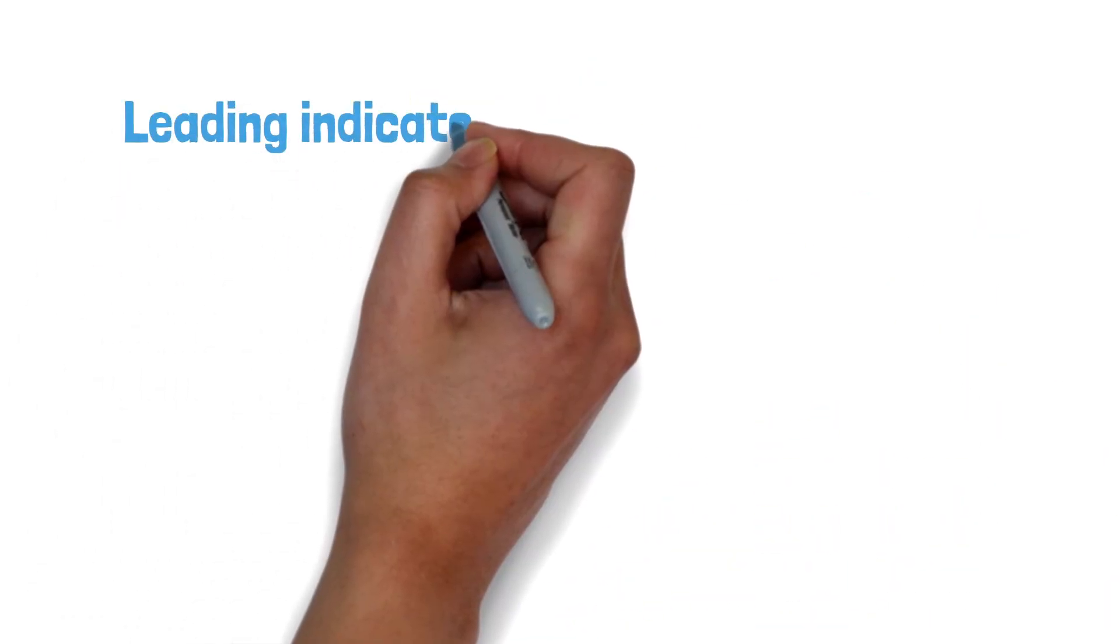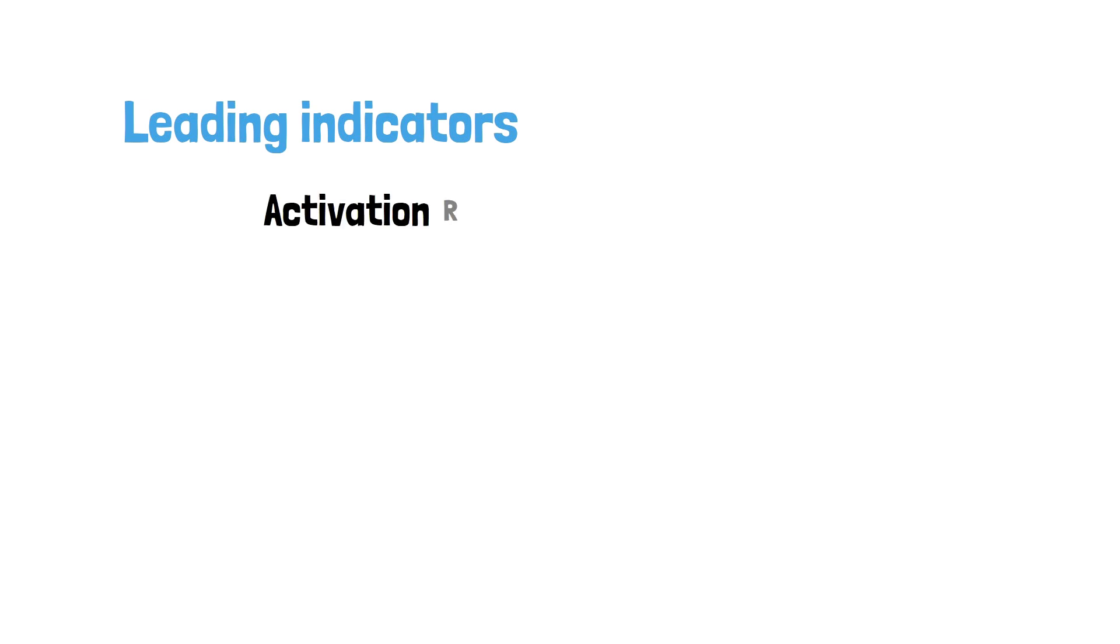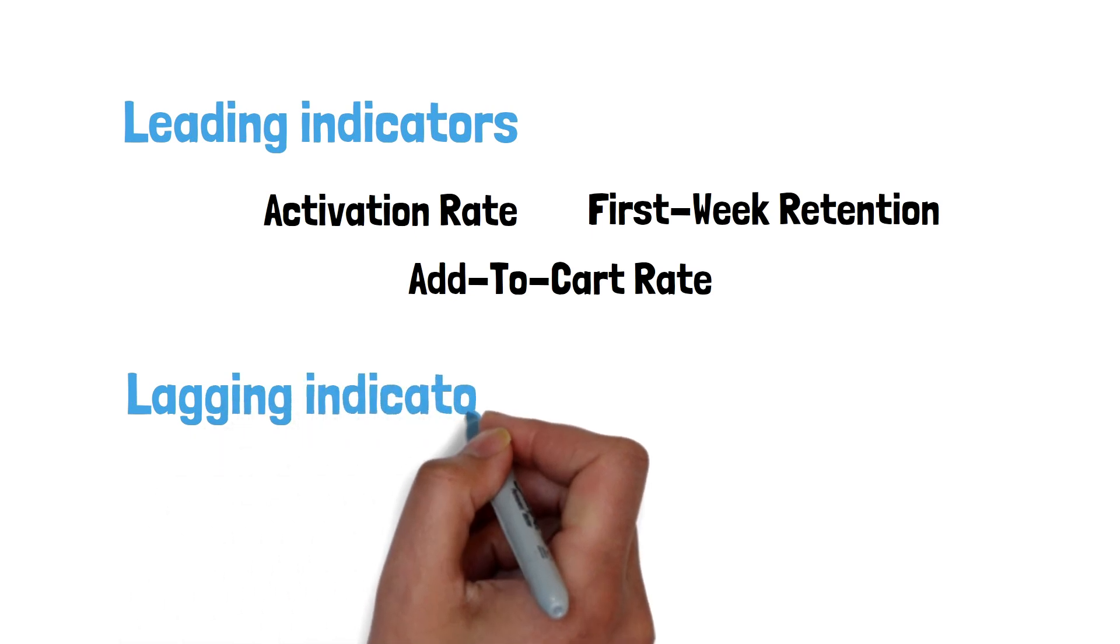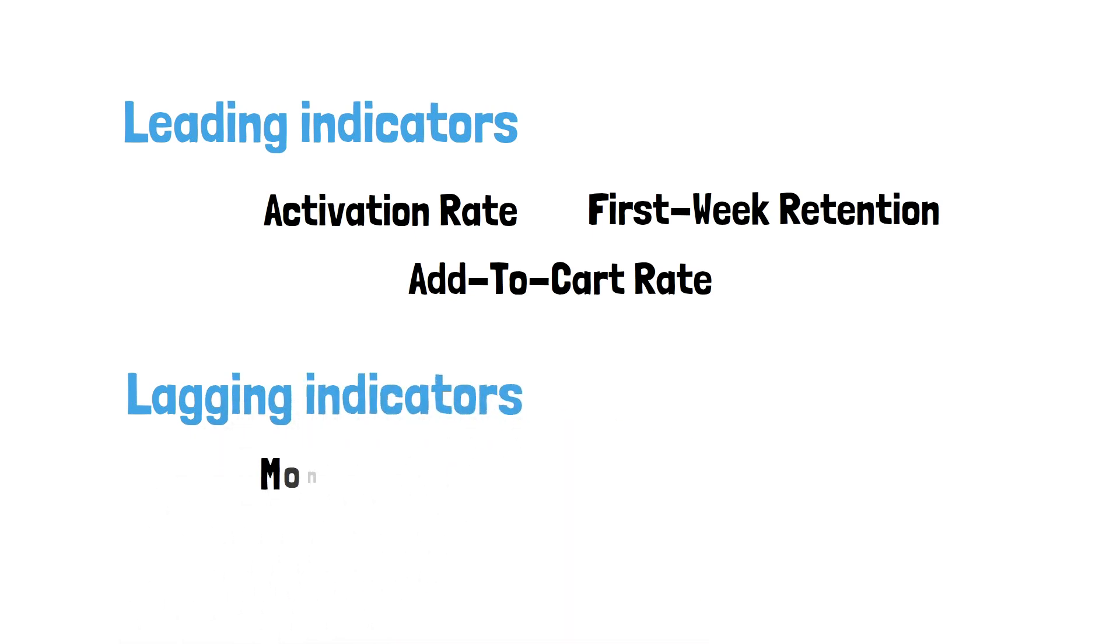Use leading indicators to predict movement: activation rate, first-week retention, add-to-cart rate. Use lagging indicators to confirm impact: monthly revenue, on-time delivery, churn.